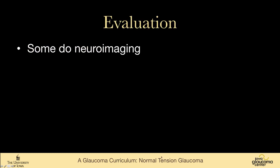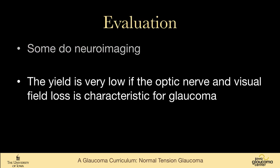Some people will do neuroimaging for patients who have normal tension glaucoma. I find this is very low yield for people who have disease that looks exactly like glaucoma. Certainly if the visual field loss doesn't fit the optic nerves — if someone has field loss far beyond the amount of cupping or it doesn't match — then neuroimaging would be reasonable. But for somebody whose nerve looks exactly like glaucoma with a notch and a matching visual field defect, I don't find this to be particularly cost-beneficial.